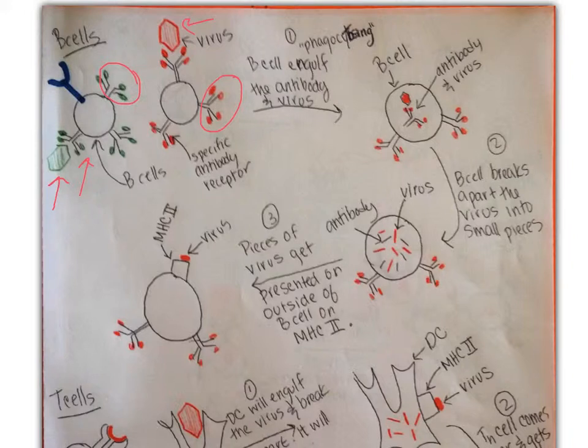When it bumps into a virus, the B cell is going to engulf the antibody and the virus, and we call this phagocytosing. So we talk about what does that word mean.